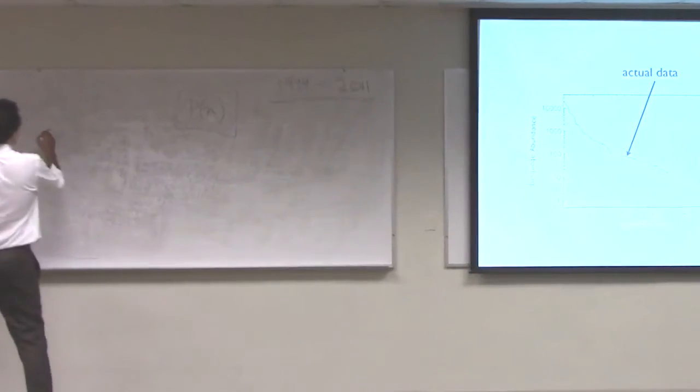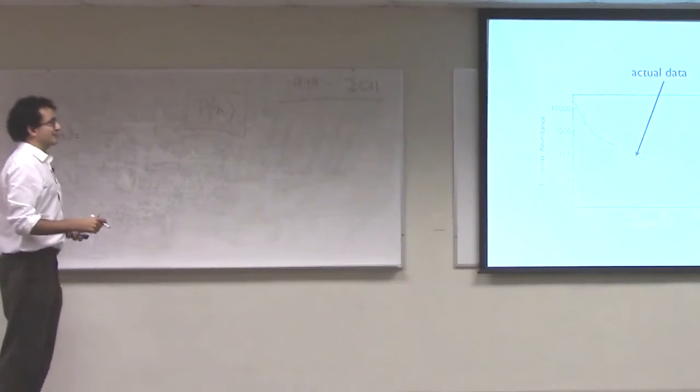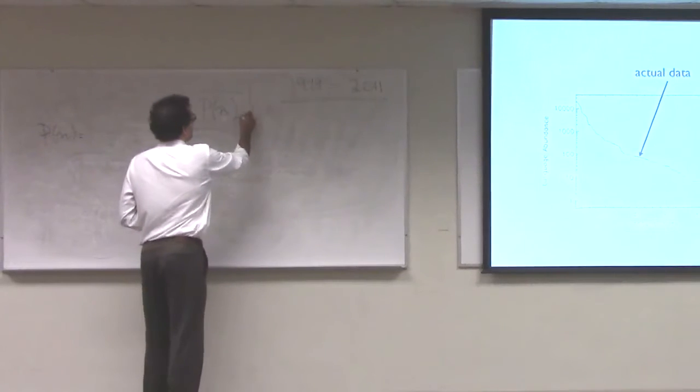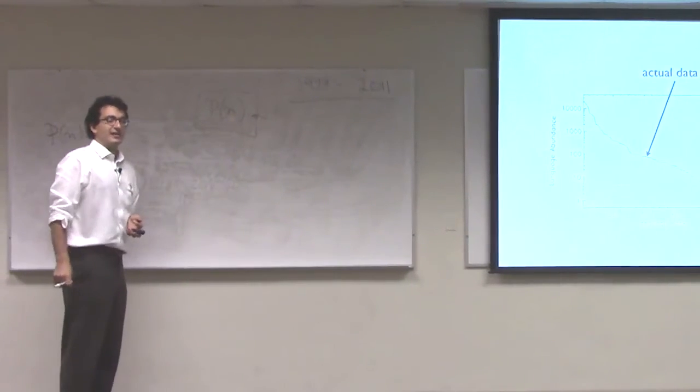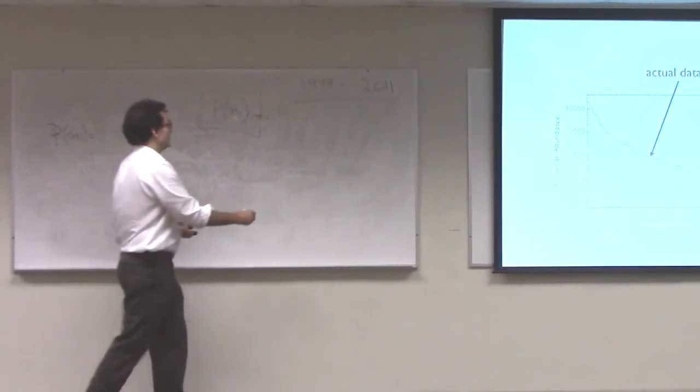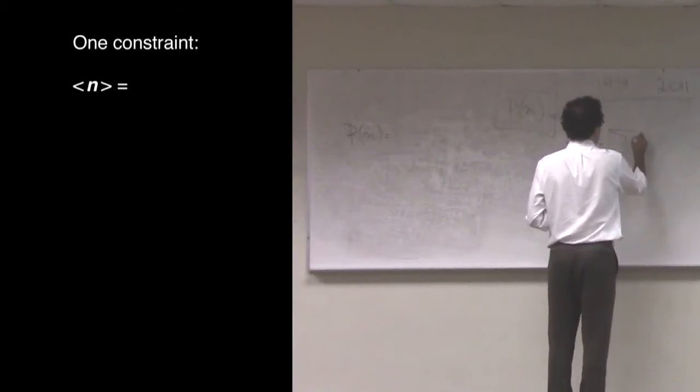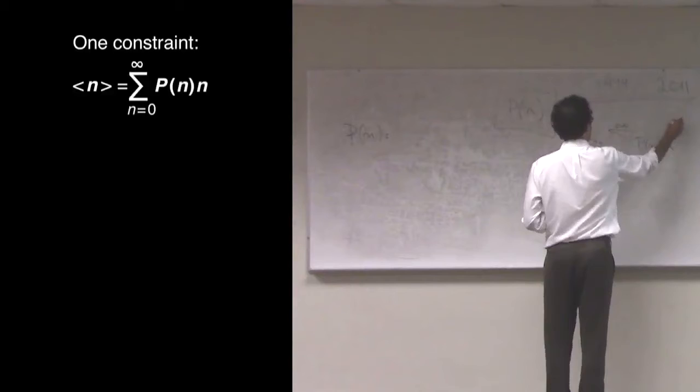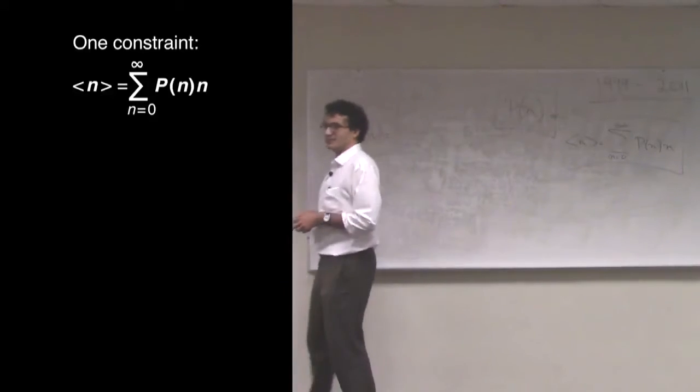So, the first thing we'll try is a maximum entropy distribution for language abundance. In other words, for the probability of finding a language with n projects. And what we're going to do is we're going to constrain only one thing, which is the average popularity of a language. This is going to be our one constraint for the max-ent problem.